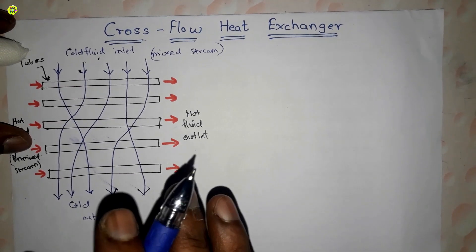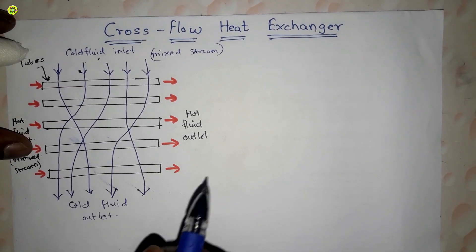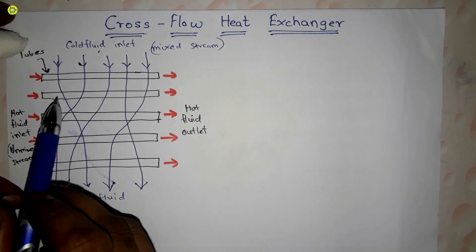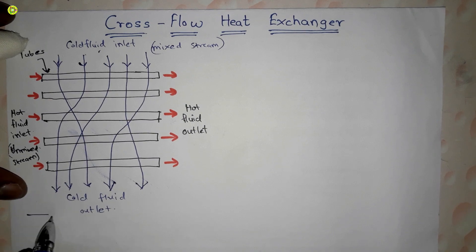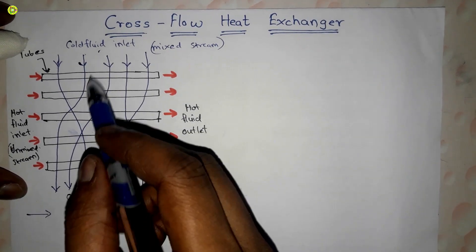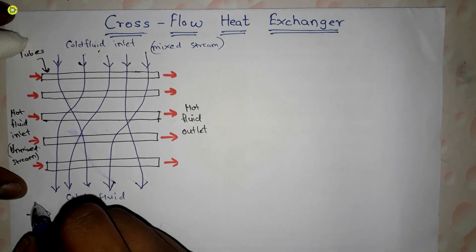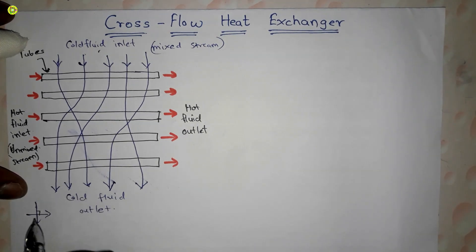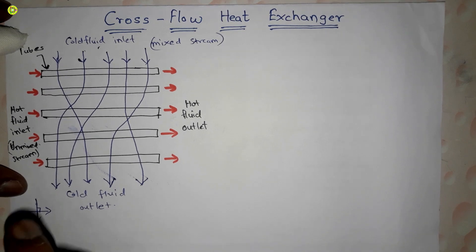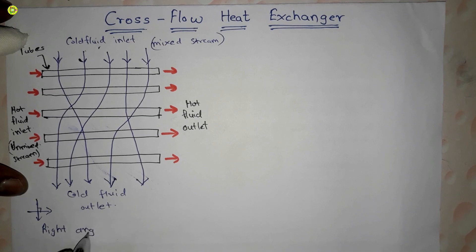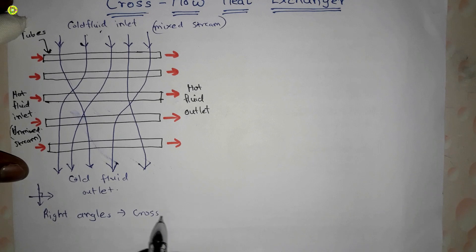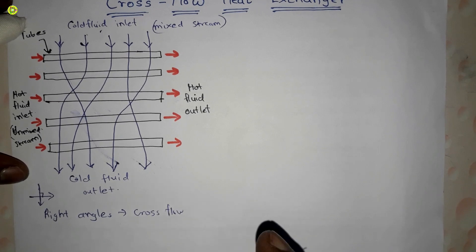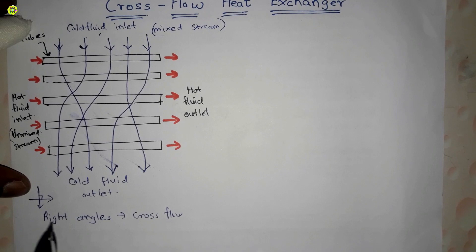In a cross flow heat exchanger, the flow of both fluids — hot and cold — is always at right angles to each other. That is why it is called a cross flow heat exchanger. The hot fluid flows in the horizontal direction and the cold fluid flows in the vertical direction, so they flow at right angles.